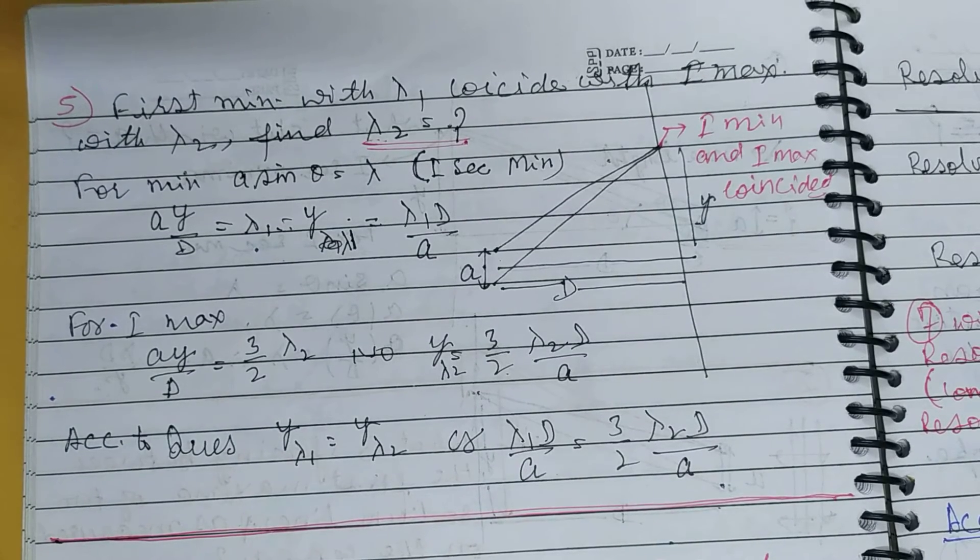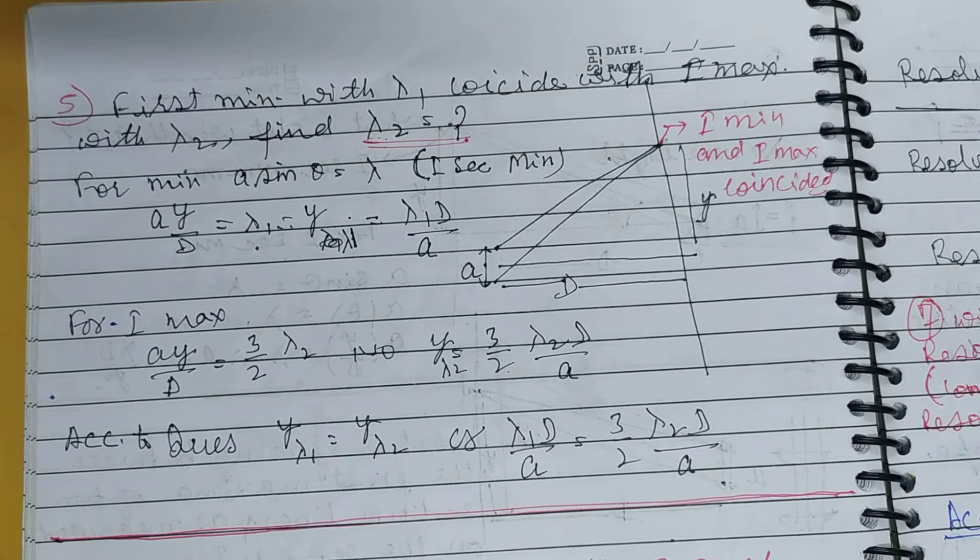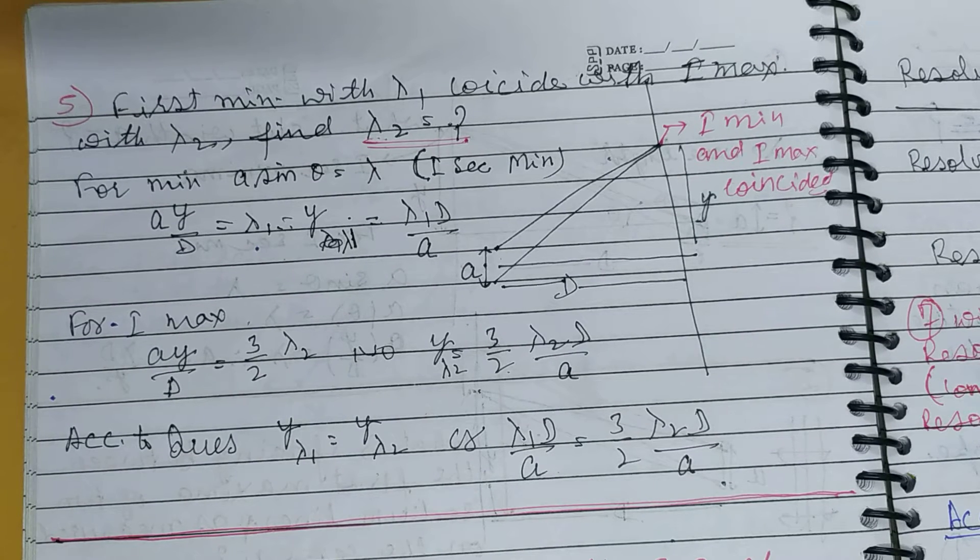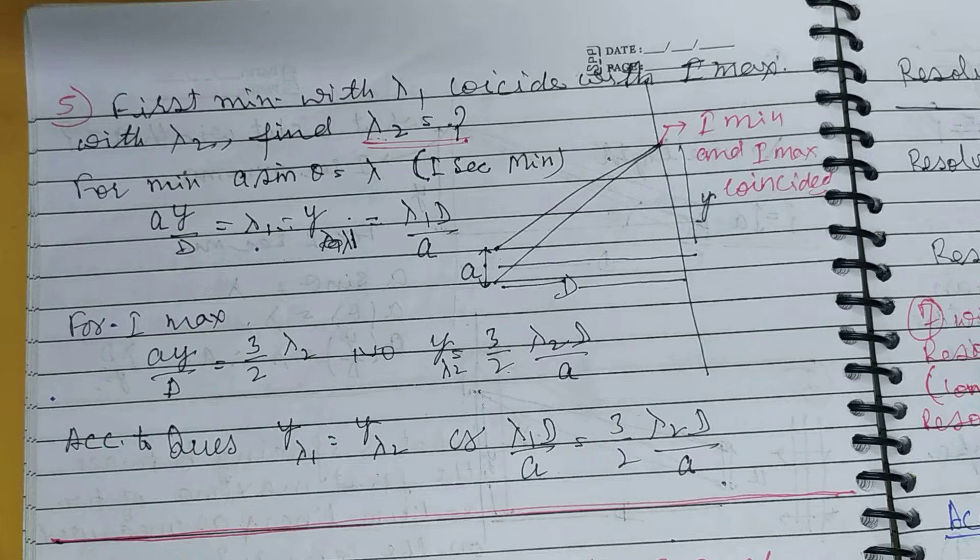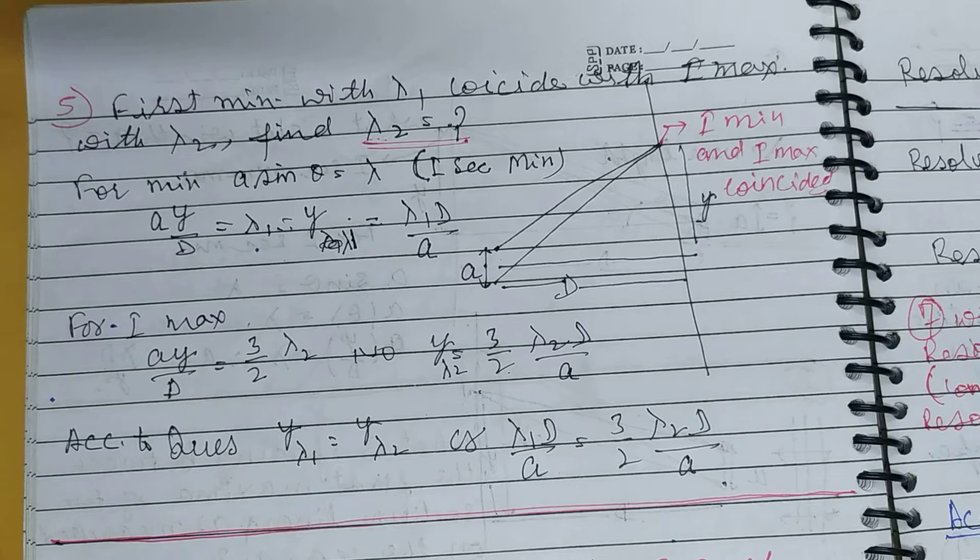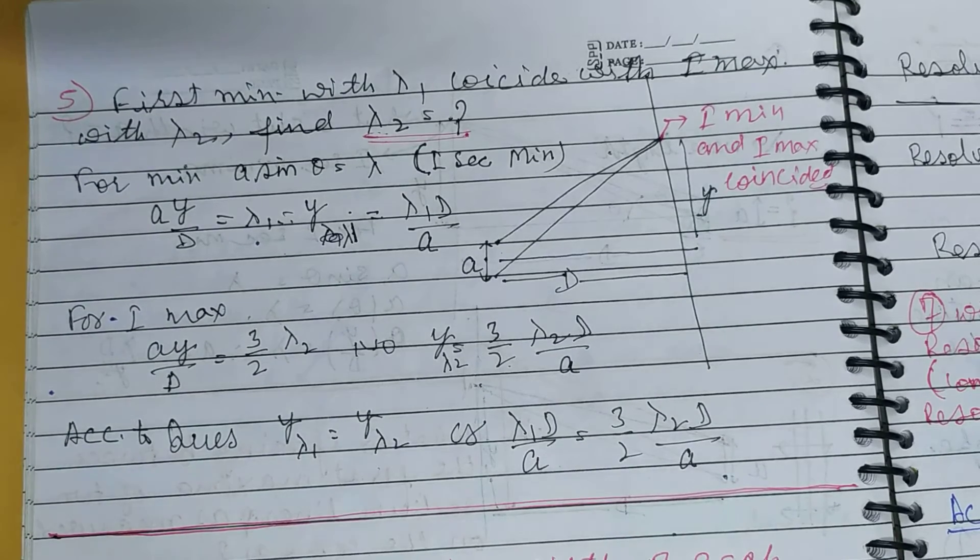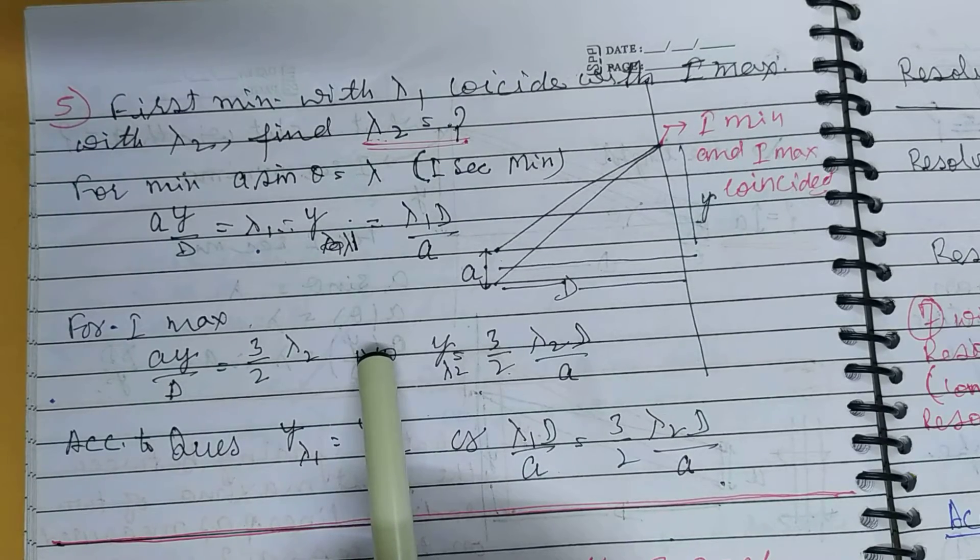Hello students, now question is: in a single slit diffraction experiment, first minimum for a wavelength lambda 1 coincides with the first maximum of some other wavelength lambda 2. Calculate lambda 2. So in this case you are using one wavelength of lambda 1, so you have first secondary minimum.